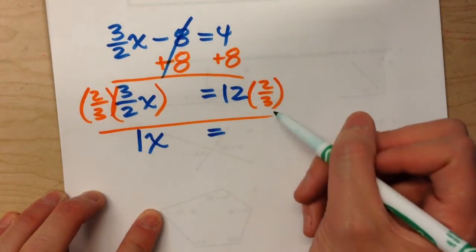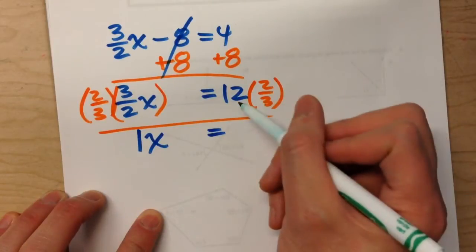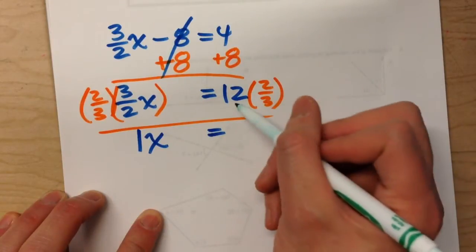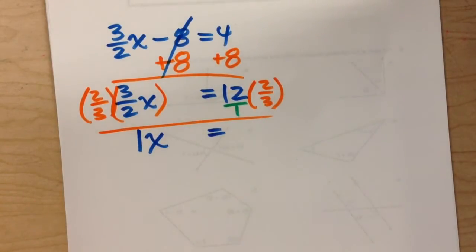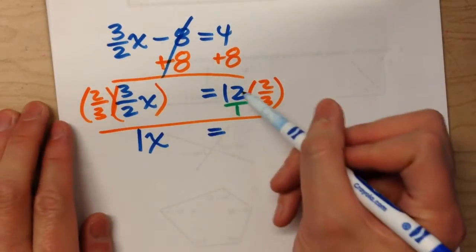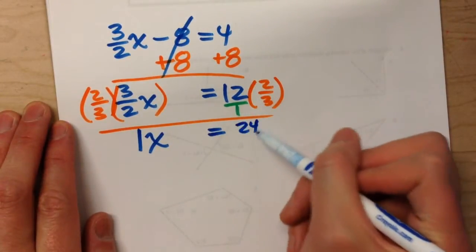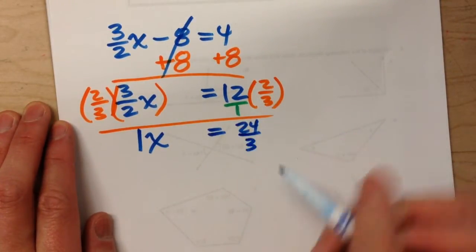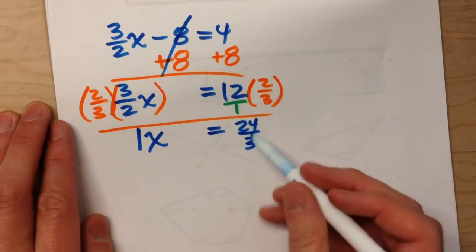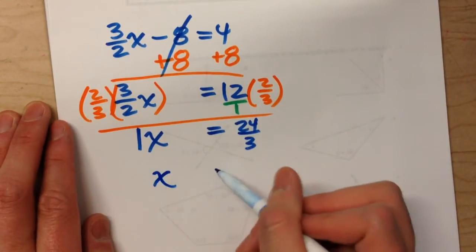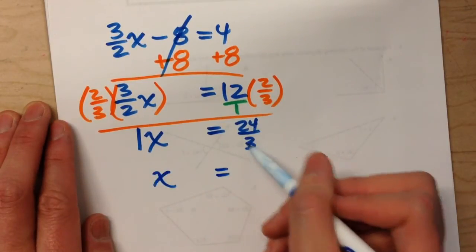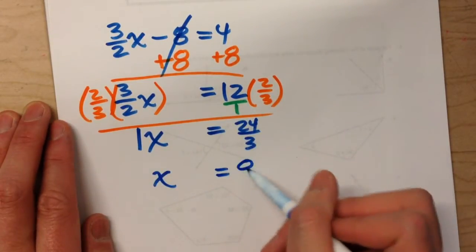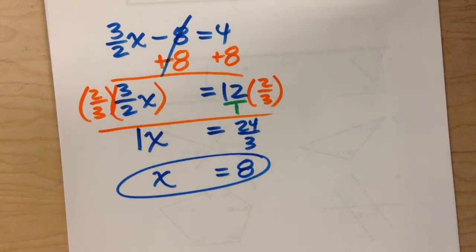We could write a 1 in front of it as one whole x, but we don't usually write 1x — we just leave it as x. On the right side, 12 times 2 thirds: put the whole number over 1, top times top is 24, bottom times bottom is 3. Simplify: x equals 24 divided by 3, which is 8.